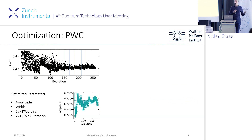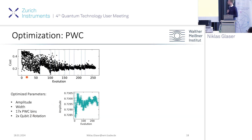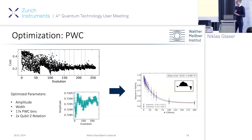The piecewise constant pulse, parameterized with 17 bins, also shows nice convergence but takes longer to fully converge due to the significantly larger parameter space. However, it reduces the gate error by roughly a factor of three, achieving 99.7% fidelity. Interestingly, this optimized pulse shows some non-symmetry with a certain undershoot, which partially compensates for flux distortions in the line — a feature we further characterized using cryoscope measurements directly on the device.